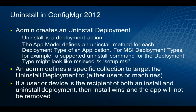The app model defines the uninstall method for each deployment type. For the MSI deployment type, a supported uninstall command could be calling MSIExec with the /X switch and the setup MSI to begin removing the application. The admin defines a specific collection to target the uninstall deployment against, typically mirroring the original application deployment. If a user or device is the recipient of both the install and uninstall, the install wins and the app will not be removed.